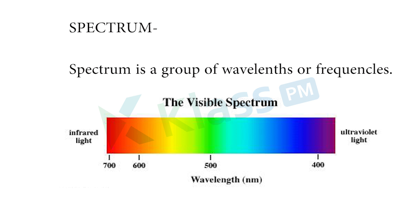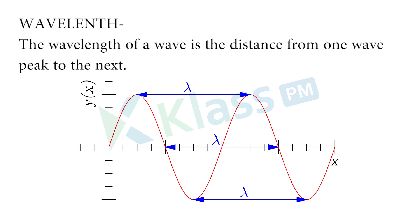The next keyword is spectrum. Spectrum is a group of wavelengths or frequencies. We will look at what wavelength and frequency are next. A combination or group of different wavelengths or frequencies together is what we call a spectrum.